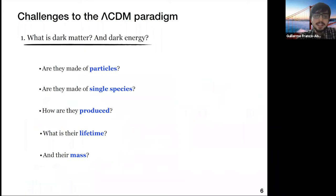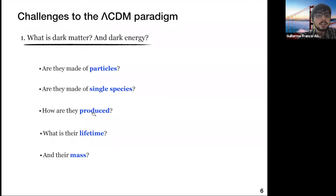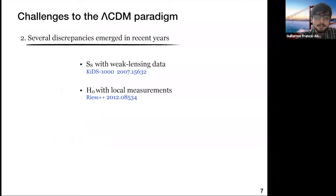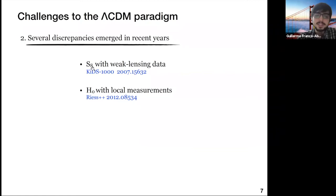However, this model faces several challenges. Most importantly, it doesn't explain the nature of its main constituents — dark matter and dark energy — which we call the dark sector. It doesn't tell us whether these components are made of particles, whether they consist of a single or multiple species, or anything about their production mechanism, lifetime, or mass. Another challenge has appeared in recent years with increasing precision in cosmological data: several experimental discrepancies in the determination of some parameters, such as the S8 parameter measuring growth of structure, and the Hubble constant.